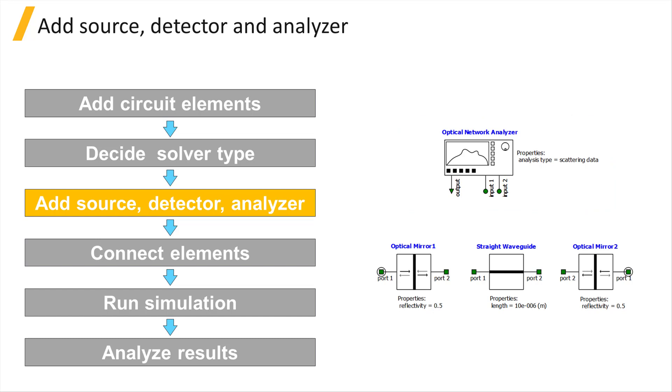Whereas for a time domain simulation, you can specify a source with a time varying signal and use an oscilloscope to measure the output over time.